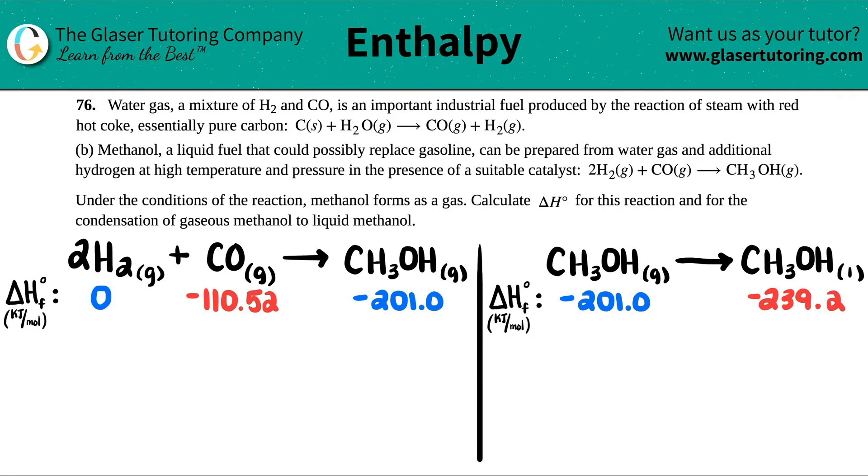Number 76: Water gas, a mixture of H2 and CO, is an important industrial fuel produced by the reaction of steam with red hot coke, essentially pure carbon. Now we're doing letter B, so we did letter A already.